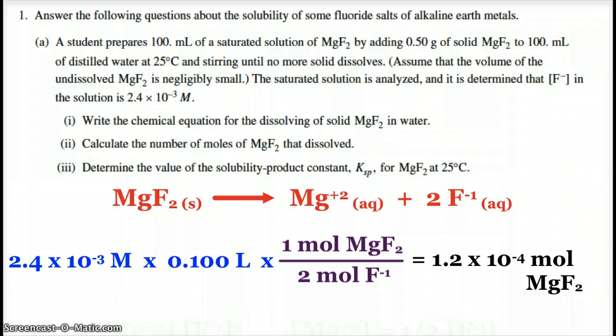And so we get 1.2 times 10 to the negative fourth moles of magnesium fluoride. You can't use the 0.50 grams here because we don't know how much did dissolve and how much didn't dissolve. So you have to use the fact that you know that the solution had 2.4 times 10 to the negative third molar of the fluoride ions. And those all came from the magnesium fluoride.